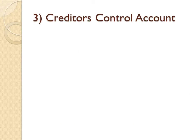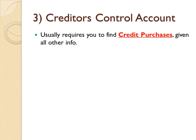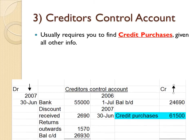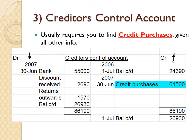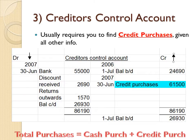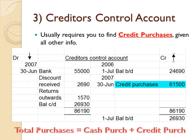The third account to analyze is the creditors control account. This requires you to find credit purchases given all other information about creditors. Just like total sales, total purchases is made up of cash purchases plus credit purchases. This total purchases figure goes into your trading account.